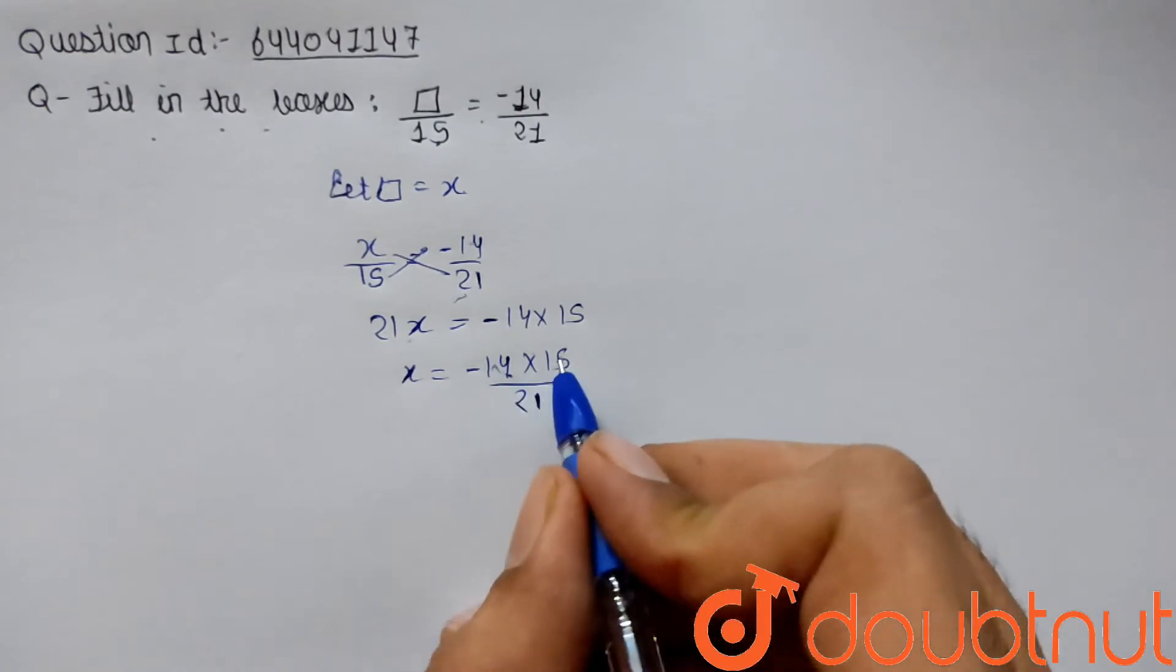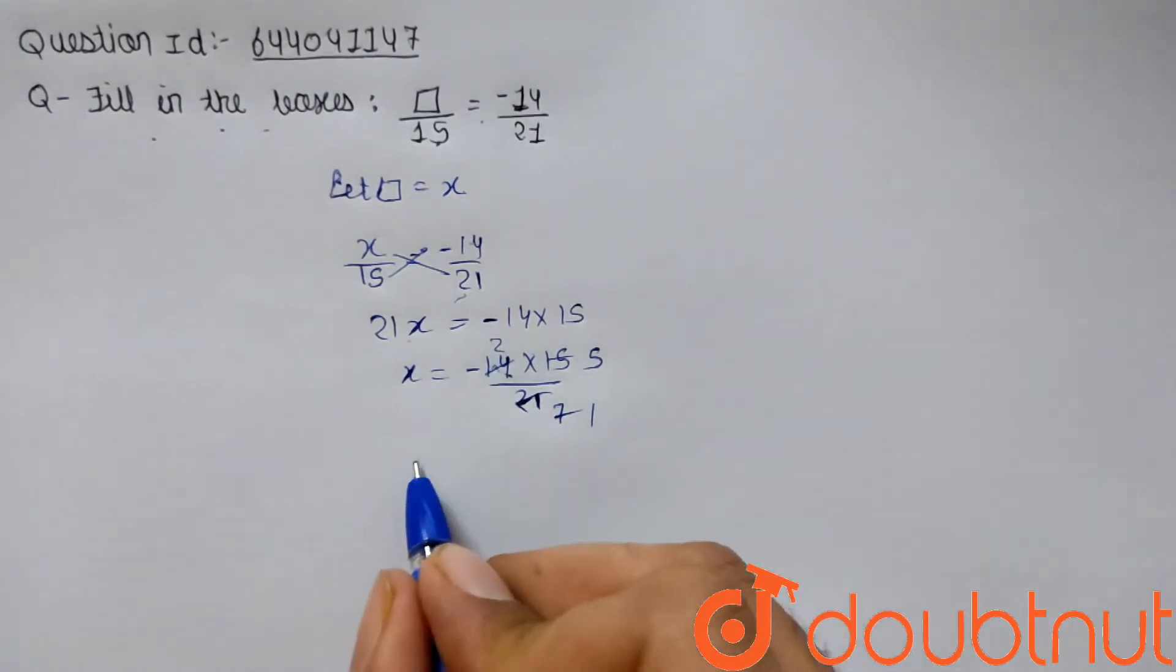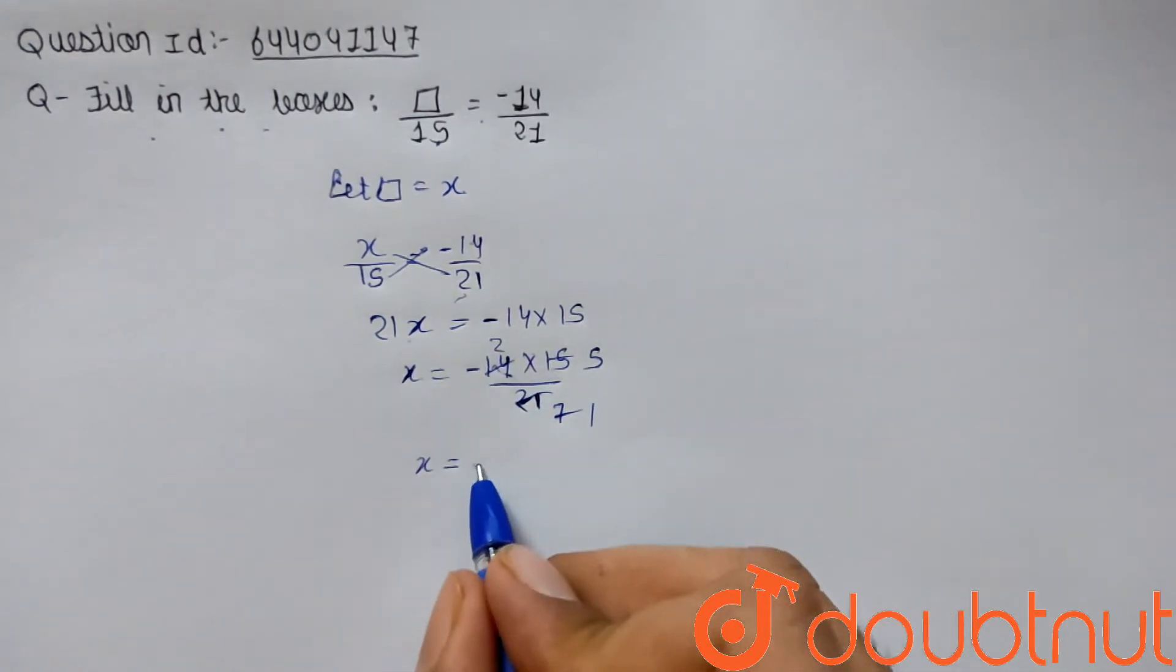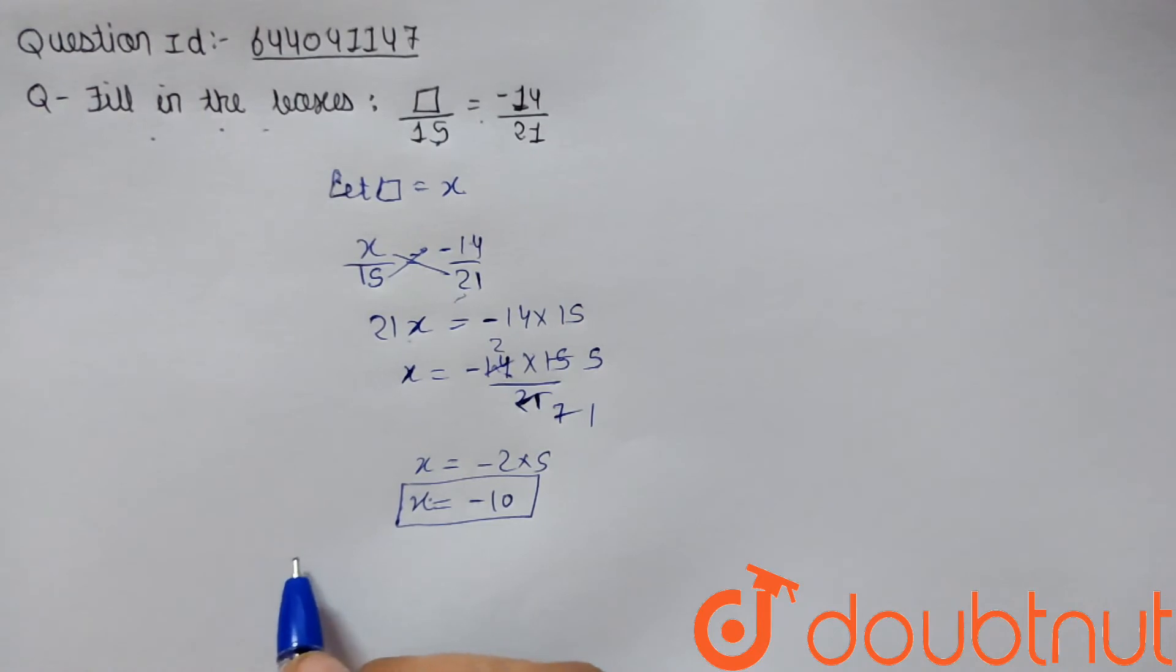3 sevens are 21, 3 fives are 15, 7 ones are 7, 7 twos are 14. So x equals minus 2 into 5, which is minus 10. So our required fraction will be minus 10.